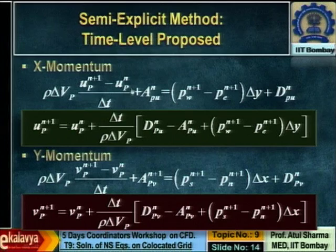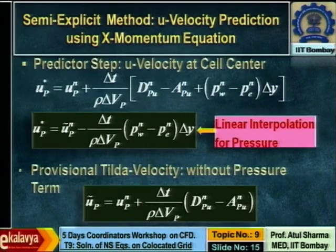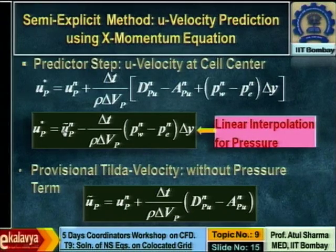The original proposition is given in the slide — pressure is taken implicitly, for x-momentum (u velocity) and y-momentum (v velocity). The predictor step for u velocity can be broken into two parts. The first part, which I denote as tilde velocity or provisional velocity, excludes the pressure term: u-tilde equals u at the previous time level plus delta-t divided by rho times delta-V times (total diffusion minus total advection) from the previous time level.